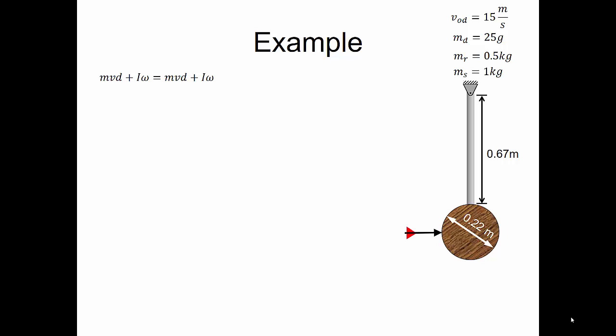We'll start by writing the conservation of angular momentum equation. The dart is treated as a particle and only has linear momentum in the initial state. Before the dart strikes the sphere, there's no rotation, so we can drop out the mass moment of inertia times angular velocity for the beginning of the problem. Once the dart embeds into the sphere, it becomes part of the sphere and there's no translation anymore — the whole thing rotates together. The final equation is: the mass of the dart times its initial velocity times its perpendicular distance equals the shifted mass moment of inertia for the system times its angular velocity.